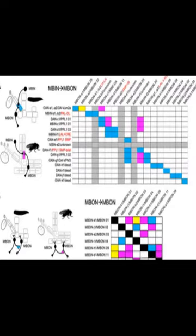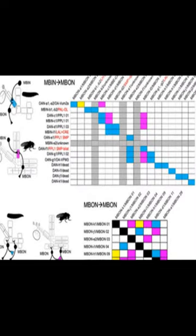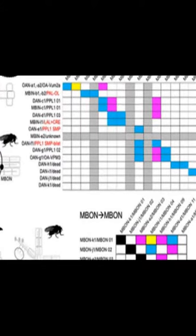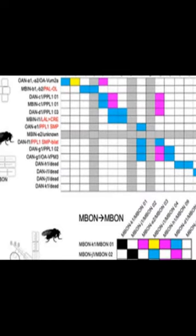This process results in the formation of the adult MB, which contains 16 distinct compartments. Each compartment is composed of a unique set of neurons, which are derived from either the larval gamma neurons or newly formed neurons.